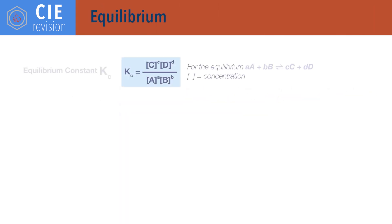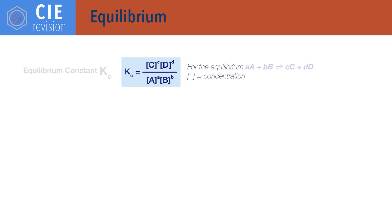For equilibrium. Kc equals concentration of products times each other divided by concentration of reactants times each other, each raised to the power of their molar ratio in the balanced reaction equation. Kc is the equilibrium constant based on concentration; concentration should be in moles per decimetre cubed and the units of Kc can be different depending on the reaction.